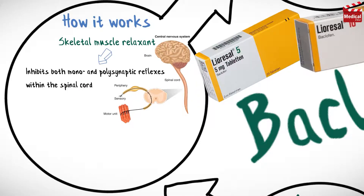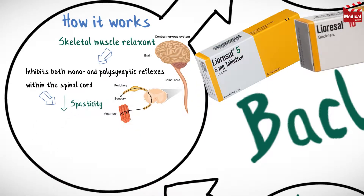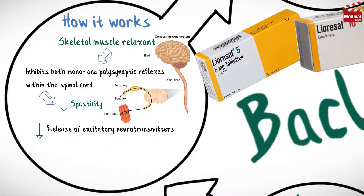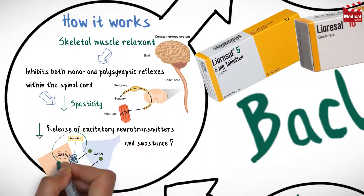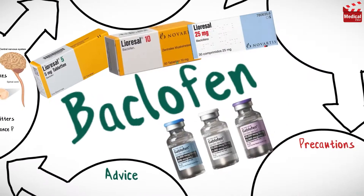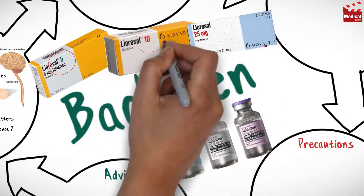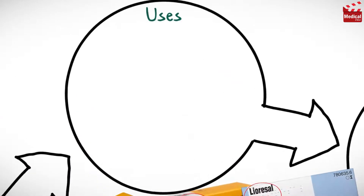It reduces the release of excitatory neurotransmitters and substance P by binding to the GABA-B receptor. It is available as 5 milligram, 10 milligram, and 25 milligram tablets, and also available as an injection.